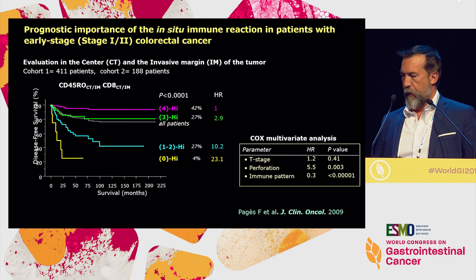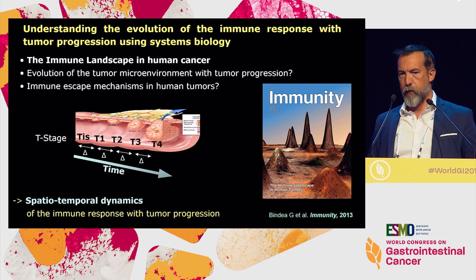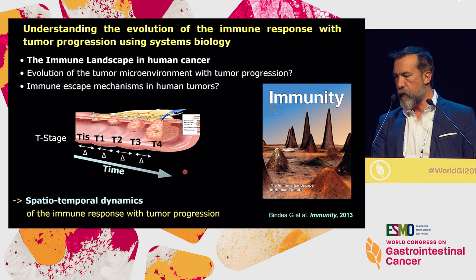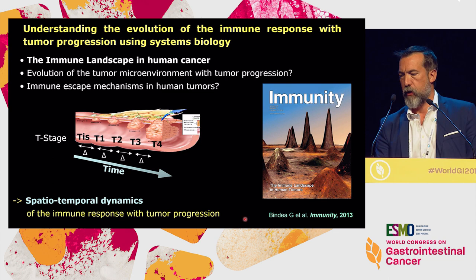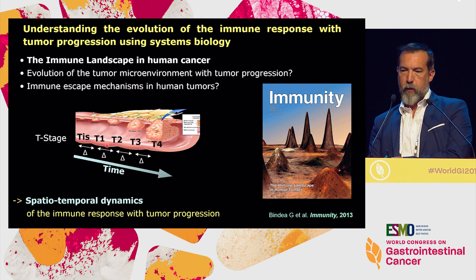We analyzed the spatiotemporal dynamics because tumor cells are changing and proliferating, and the immune microenvironment is also changing. In a paper in Immunity 2013, we analyzed this evolution of the immune landscape, showing how the immune microenvironment changes — and what is changing between T1 and T2, between T2 and T3, and between T3 and T4.